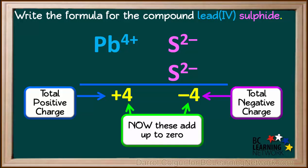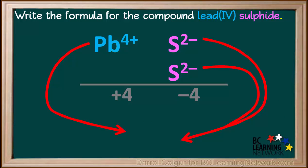Now the charges are balanced. Positive 4 and negative 4 do add up to zero. We have one lead ion for every two sulfide ions. So the formula is PbS2.